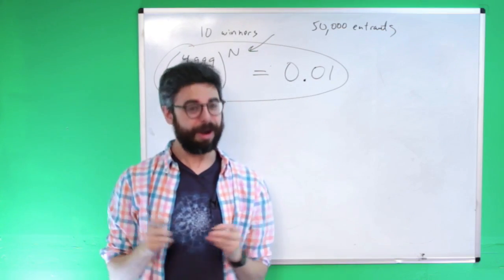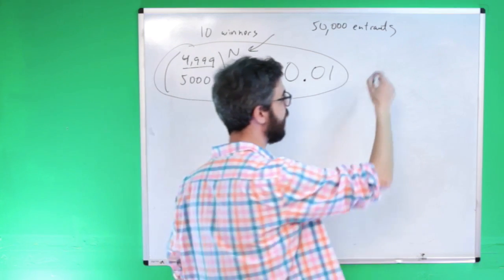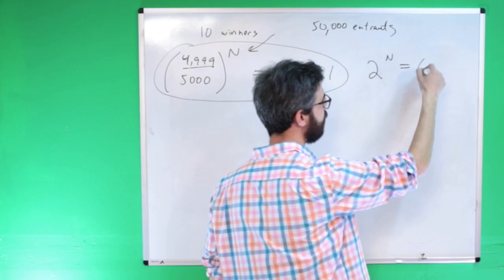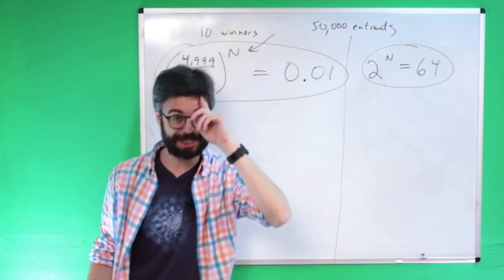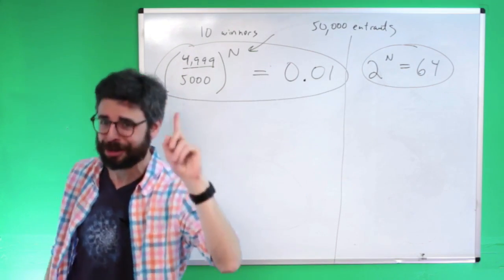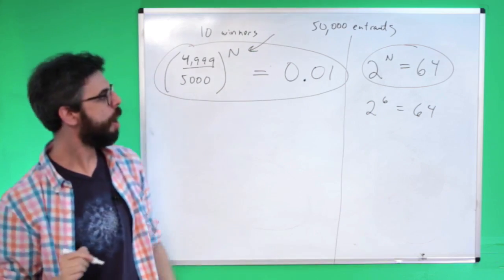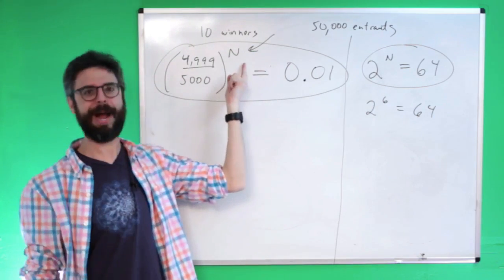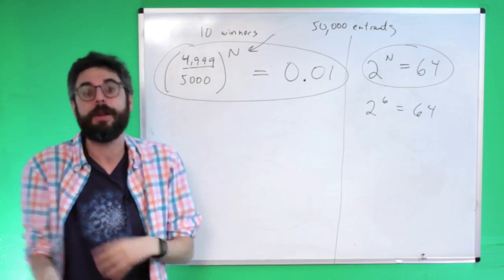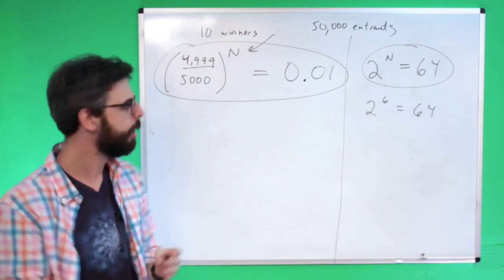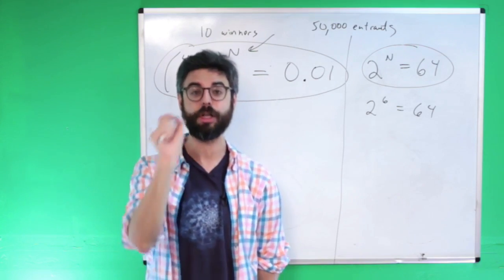Here's where more math comes in. How do you solve an exponential equation, like 2 to the n equals 64? I can see that 2 to the 6th power equals 64, but there's no way I can just visualize the answer to the general equation in my head. I need a way to solve for it — using the calculator or some code. The way to do that is with the mathematical function called logarithm.